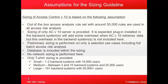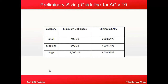Sizing for Access Control version 10.0 is based on the following assumptions using a T-shirt sizing model as a base. We assume 50,000 rules in the risk analysis rule set, and sizing covers the Access Control version 10 server with the database included. Small is 1 to 3 backend systems with 10,000 users; medium is 3 to 10 backend systems with 25,000 users; large is 10+ backend systems with 50,000+ users.